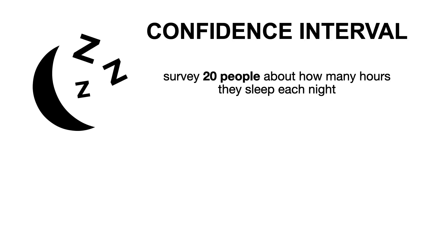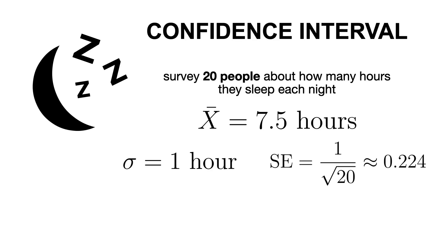Now, let's bring this back to life. Suppose you surveyed 20 people about how many hours they sleep each night, and their average sleep time is 7.5 hours, with a sample standard deviation of 1 hour, which gives us a standard error of 1 hour divided by square root of 20, which is equal to approximately 0.224.